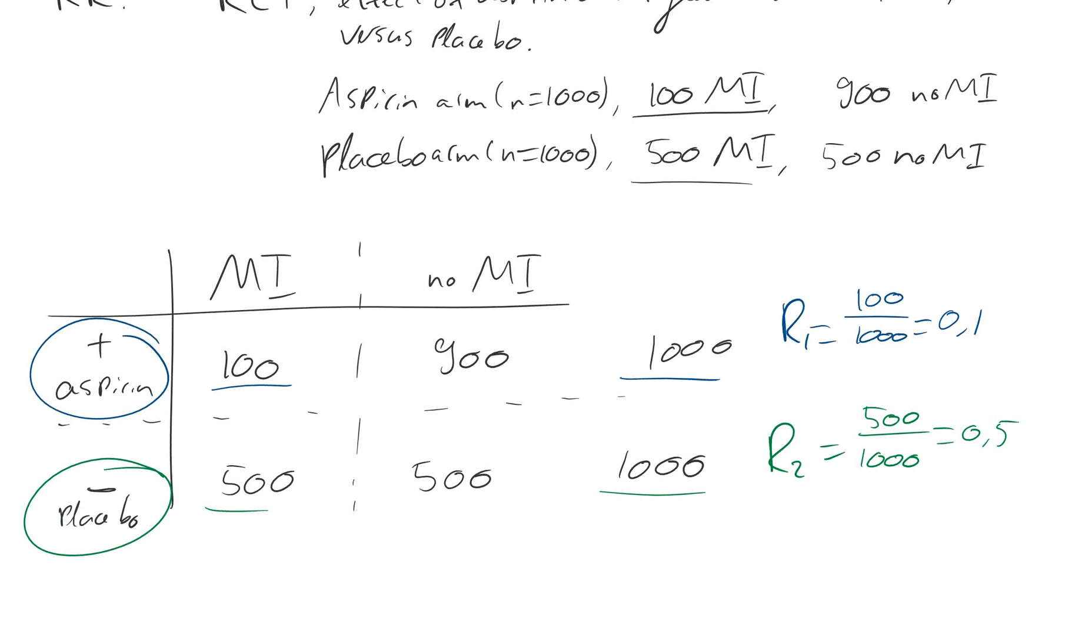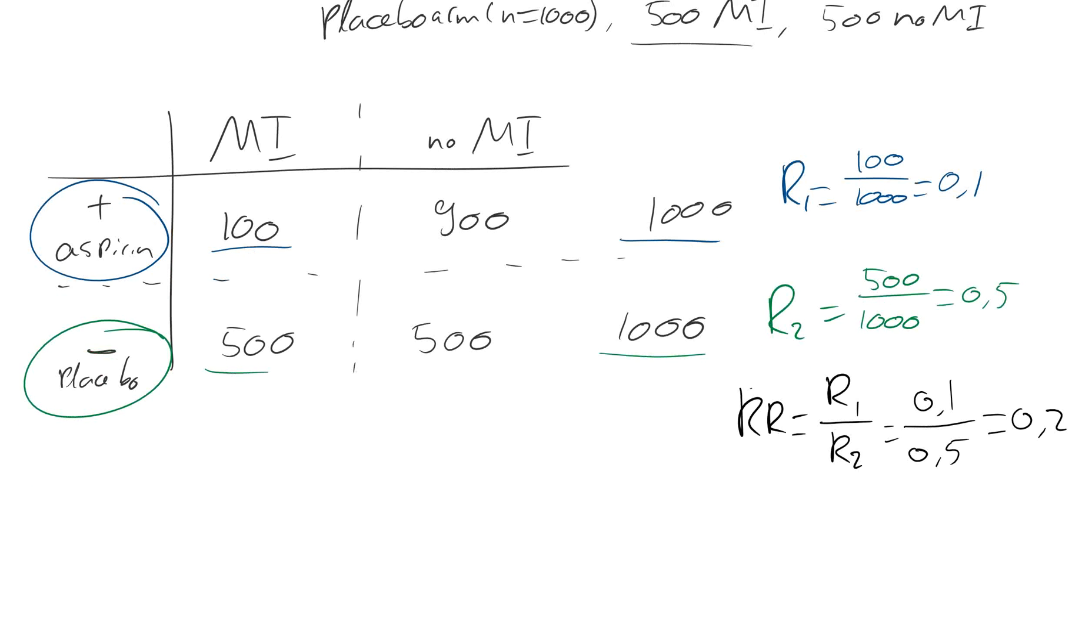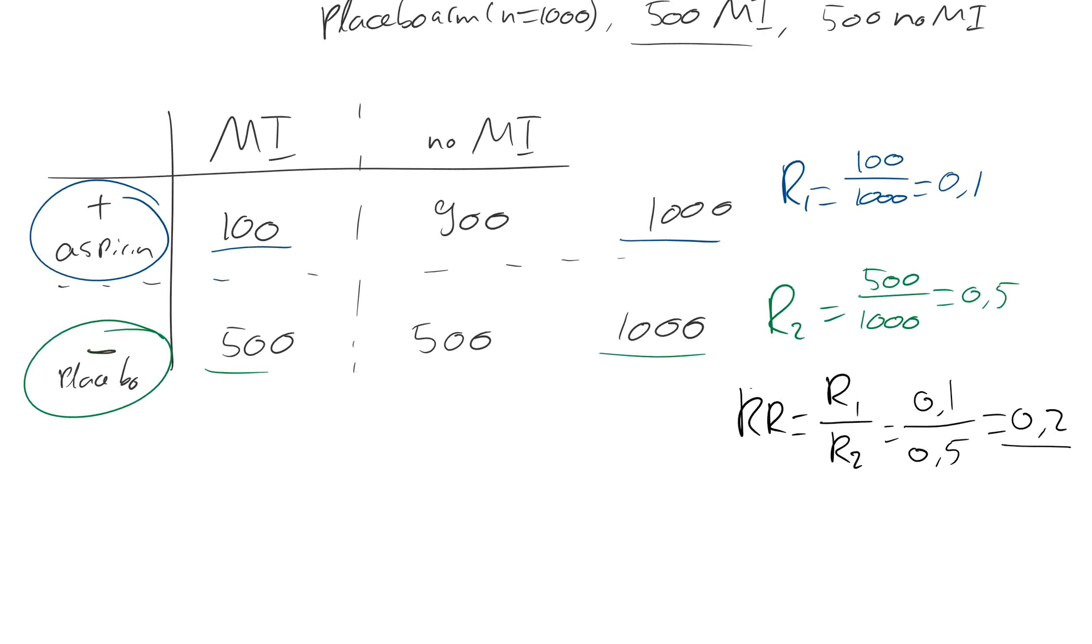Then the relative risk is R1 divided by R2. Relative risk is R1 divided by R2 is 0.1 divided by 0.5 is 0.2. So that's the risk of myocardial infarction when you're using aspirin relative to when you are using placebo. Relative risk is 0.2.